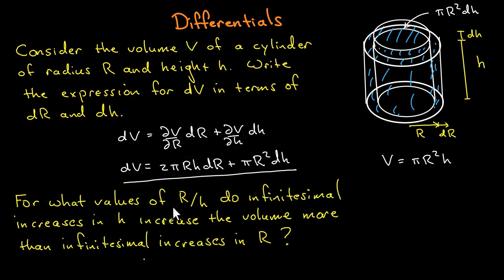For what values of the ratio R/h do infinitesimal increases in height increase the volume more than infinitesimal increases in the radius? In other words, when is the contribution from the height larger than the contribution from the radius? This is easy to work out. We simply want πR² to be greater than 2πRh, which gives us R/h larger than 2, or in other words the radius is larger than twice the height.